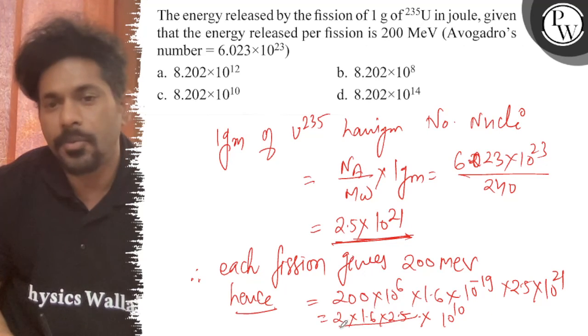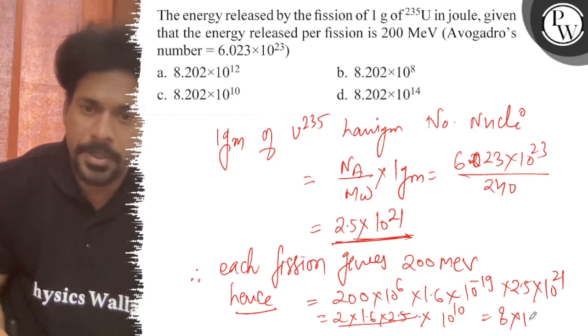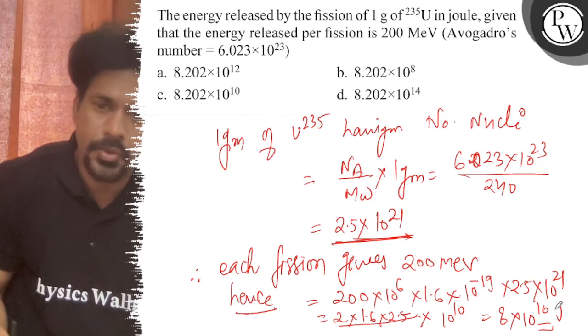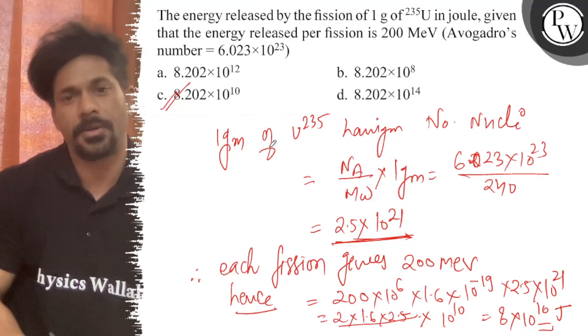The right answer is 8 × 10^10 joules. Option C is correct. All the best.